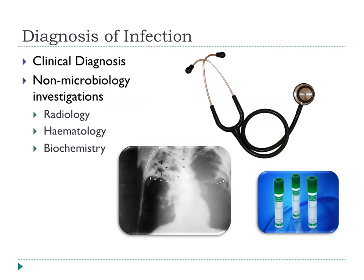The first point is that when we come to diagnose infection, we don't actually start with the laboratory — we start with clinical diagnosis. Taking a history of the illness from the patient, examining the patient for clinical signs and symptoms — all these things are important in framing the diagnosis before you use the lab. You can do a chest x-ray to reveal whether the patient might have tuberculosis, hematology to check for a high white count suggestive of infection, or biochemistry such as liver function tests if there's an infection in the liver.